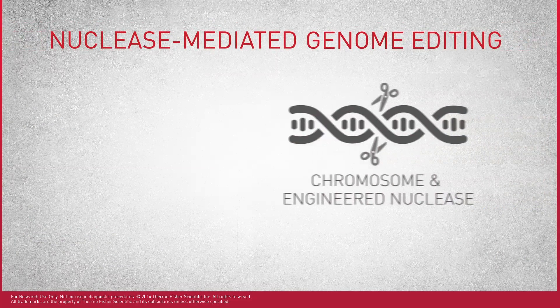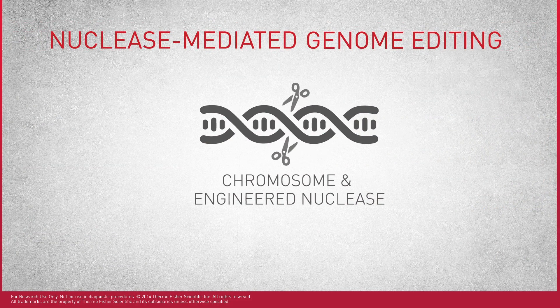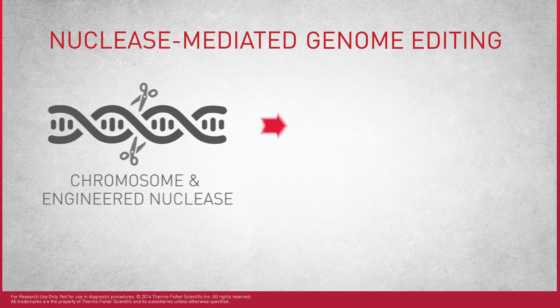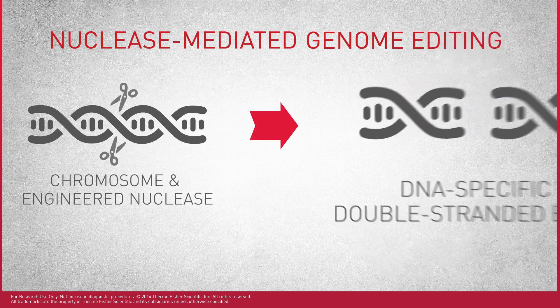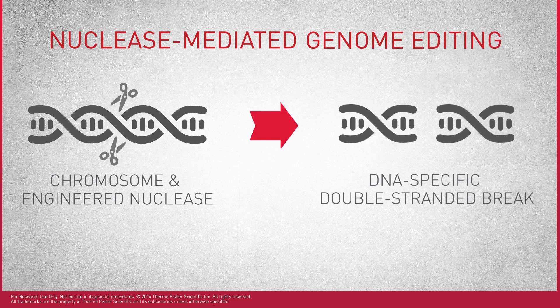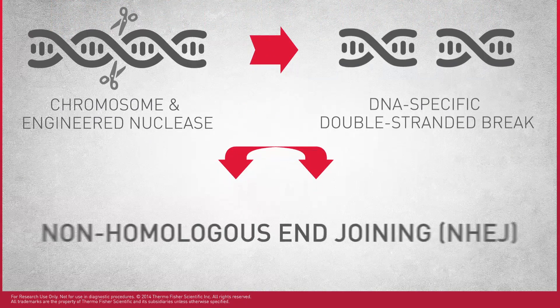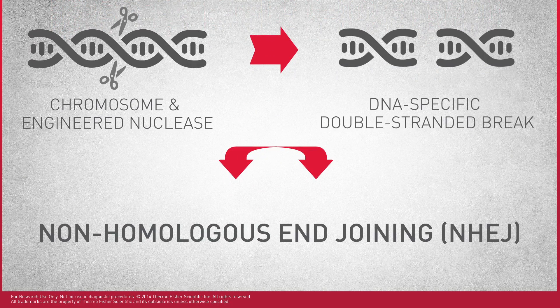Genome editing with engineered nucleases begins with DNA-specific double-stranded breaks at the target sequence, catalyzed by the engineered nucleases. These double-stranded breaks can be repaired one of two ways. The first is non-homologous end-joining, which occurs when no homologous DNA is present.